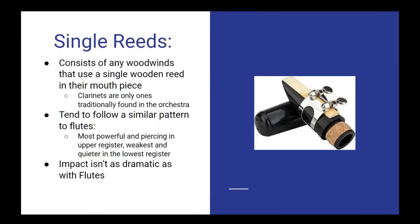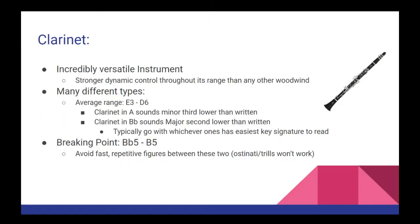Moving on to the next subsection, we find the single reeds. Single-reeded instruments include any woodwind instrument that uses a single wooden reed as part of their mouthpiece. In the traditional orchestra, this includes the clarinets. Single reed instruments tend to follow a similar pattern to flutes in which they become more powerful and piercing the higher in their range you go, and quieter and less powerful the lower you go. However, the differences aren't as dramatic as they are in the flute section. The clarinet is an incredibly versatile instrument that has greater dynamic control throughout its entire range than most other woodwinds. For example, a clarinet can play quieter in its upper registers than a flute can, though the difference isn't that large.